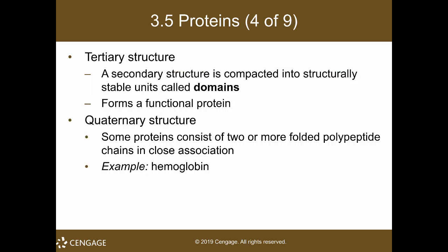The tertiary structure is the three-dimensional structure of a single polypeptide chain — it can form a functional protein. Some proteins only have a single chain, so the highest level of structure they have is a tertiary structure. An example of that is myoglobin, which is composed of only one chain and functions in the storage of oxygen in your muscles.